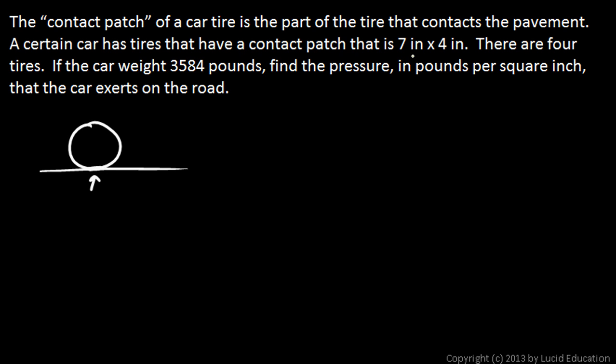And in this case, we're told that it's 7 inches by 4 inches, and that's for one tire. There are four tires. And then we're given some numbers here. The car weighs 3,584 pounds. And then we're told to find the pressure in pounds per square inch, given these measurements in inches, 7 inches by 4 inches. Find the pressure that the car exerts on the road.